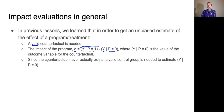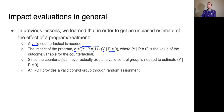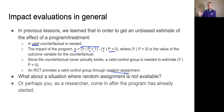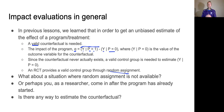We can't actually observe this counterfactual if the person gets the program. If they get the program, we can measure Y conditional on P equals one, but the counterfactual never actually exists. In the RCT, it provides a valid control group through random assignment. But what about a situation where random assignment is not available? Perhaps, and this happens very frequently, you as a researcher come in after the program has already started and you're asked to do an impact evaluation. You can't do an RCT because people weren't randomly assigned before the policy started. So is there any way to estimate a counterfactual?